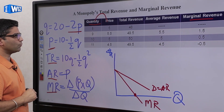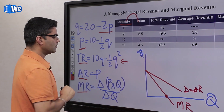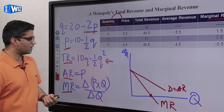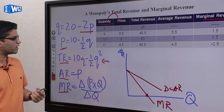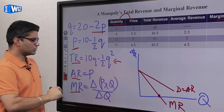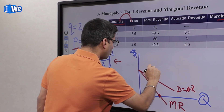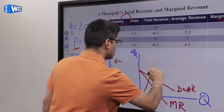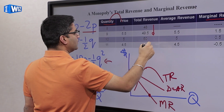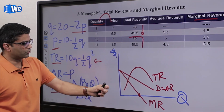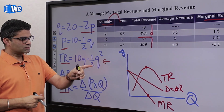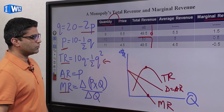Now let's graph total revenue. Total revenue has a quadratic form, so it's not a straight line. It increases for some level of quantity, reaches its highest point, and then decreases — forming an inverted U-shape. Let's look at the relationship between total revenue and marginal revenue. Marginal revenue is the change in total revenue divided by the change in quantity, and since quantity is on the x-axis and total revenue on the vertical axis, MR is simply the slope of the total revenue curve.